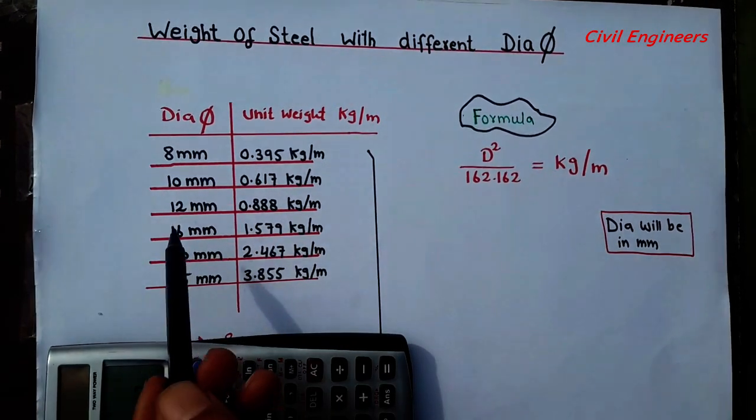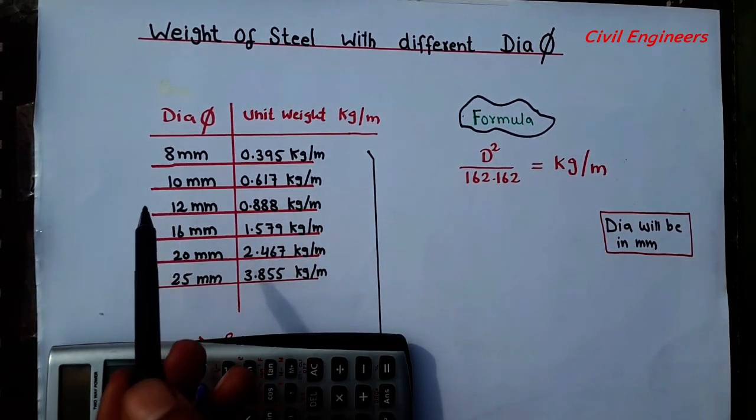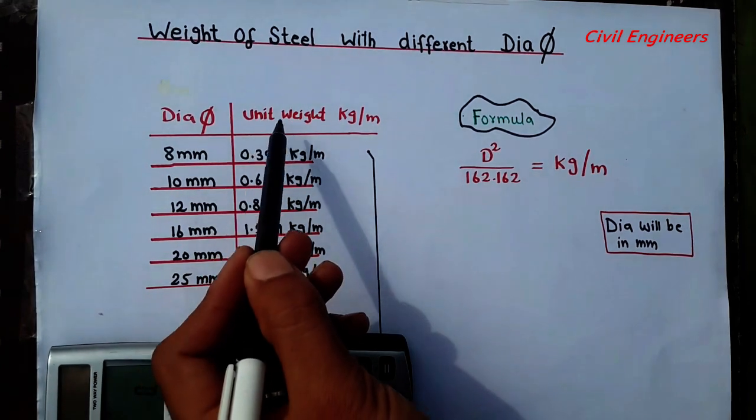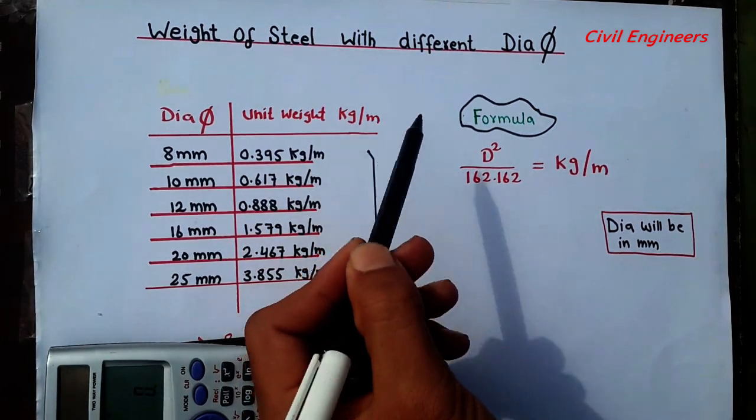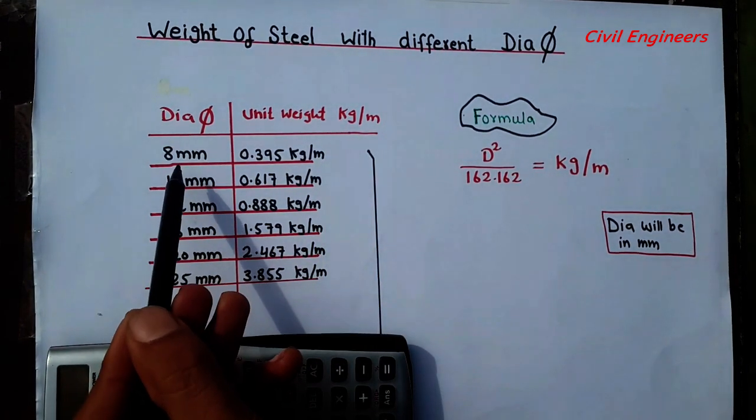So this is the list for the unit weight for steel. This is diameter and this is unit weight kg per meter. So the diameter will be in millimeter.